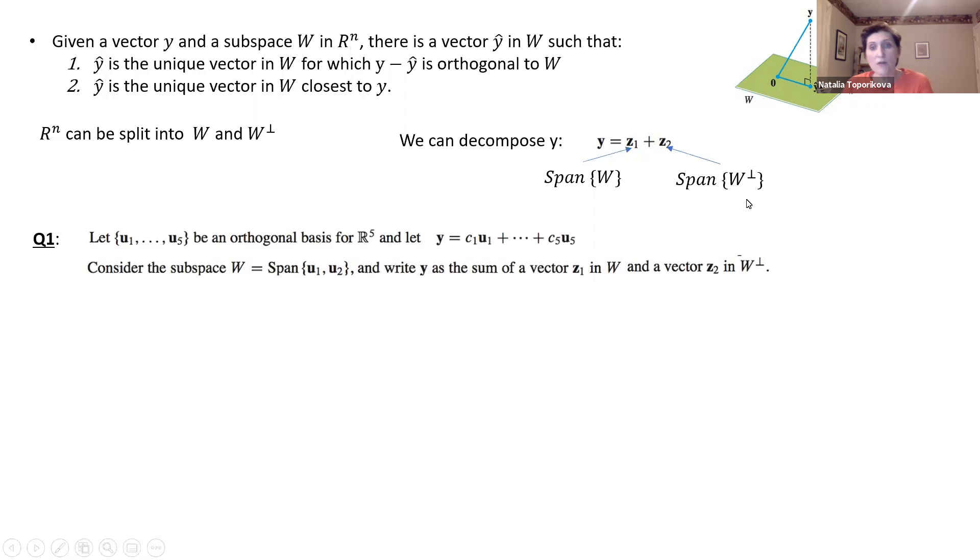Okay, let's see how that works. Let's look at the example of R^5. So we have an orthogonal basis which consists of five vectors from u1 to u5.